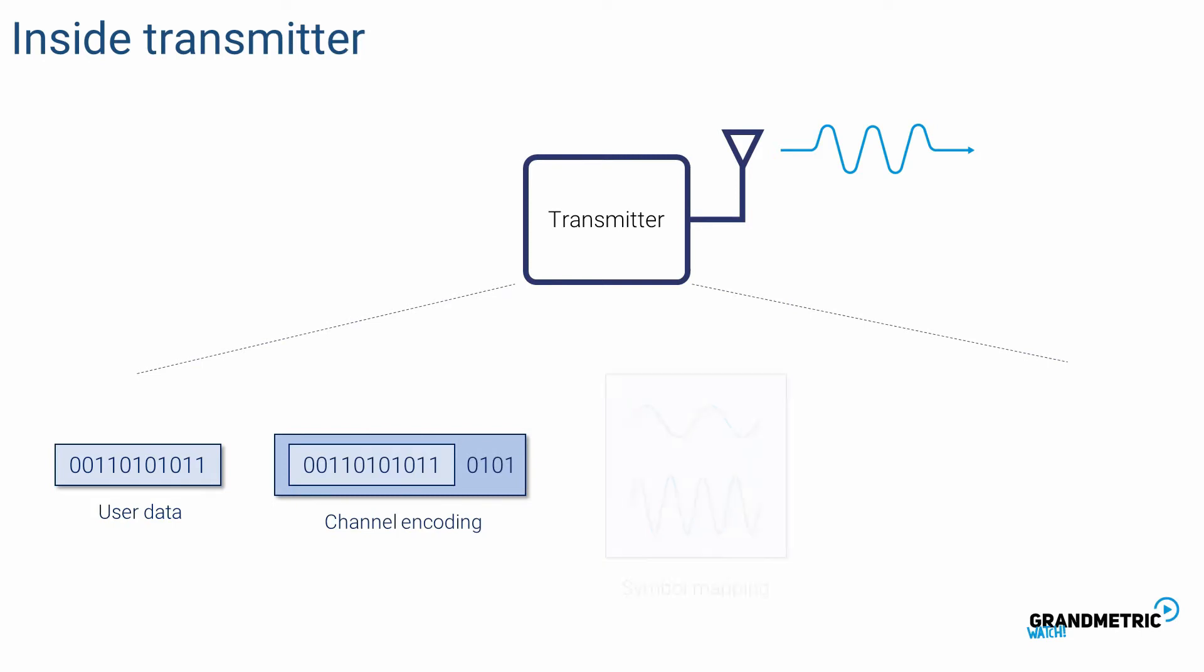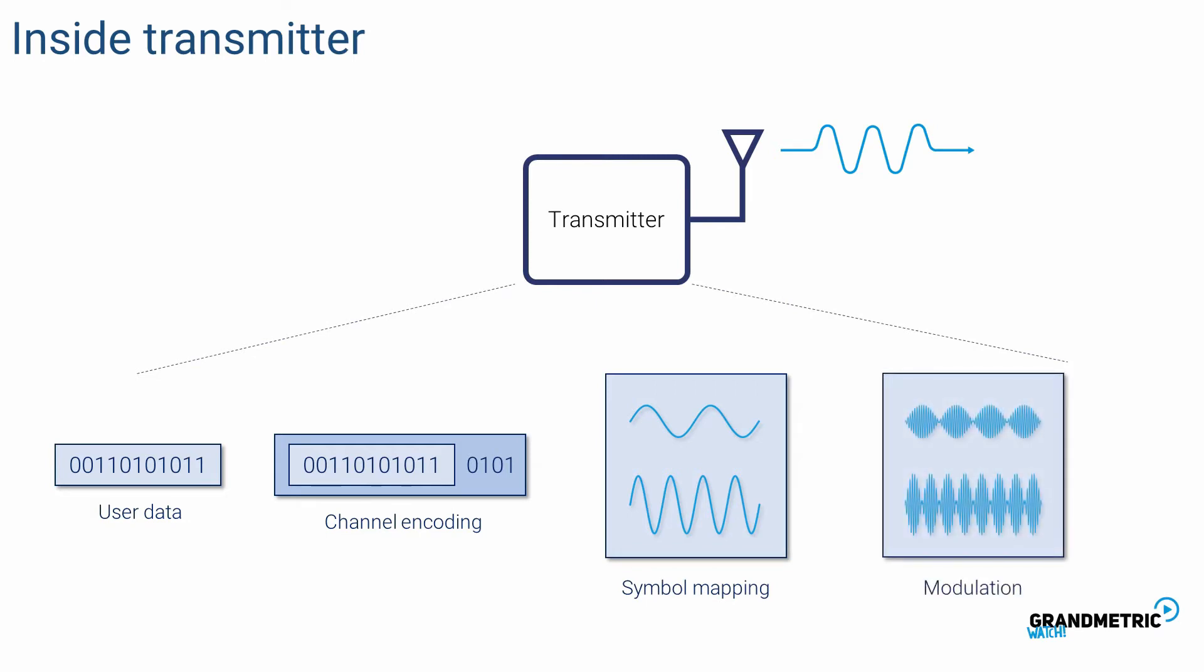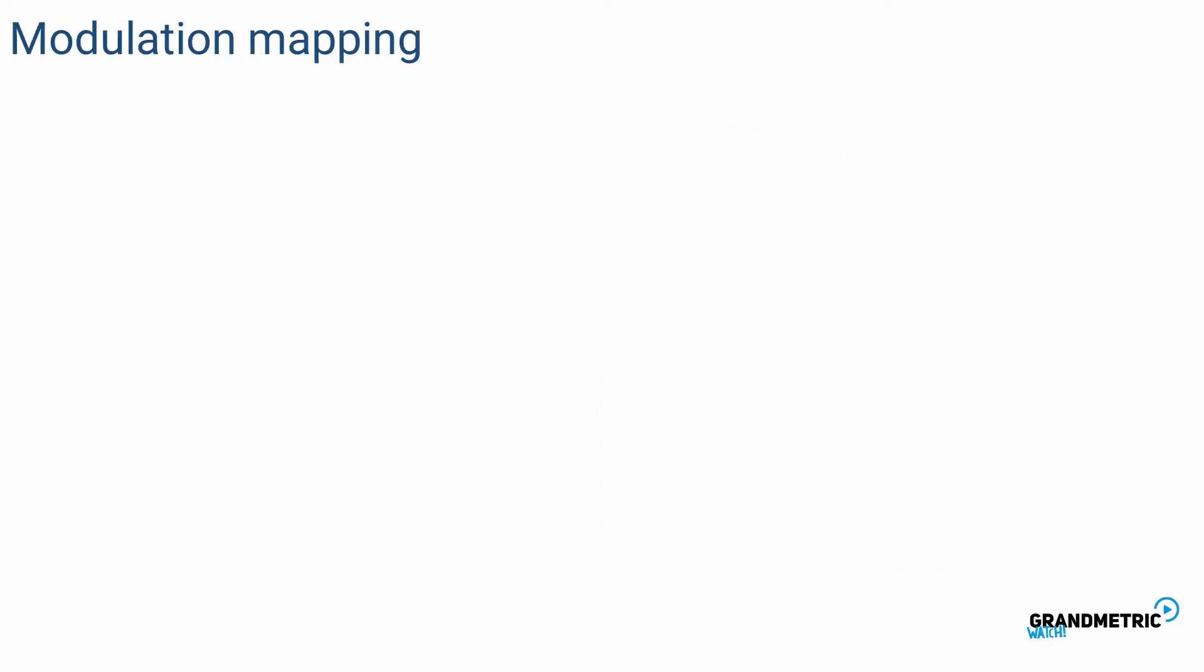The transmitter cannot send zeros and ones directly and that's why they are mapped into symbols - signals with different frequencies and amplitude. In the end signal is modulated in order to use carrier frequency designed for a specific system. There are several ways how information can be included in the signal.